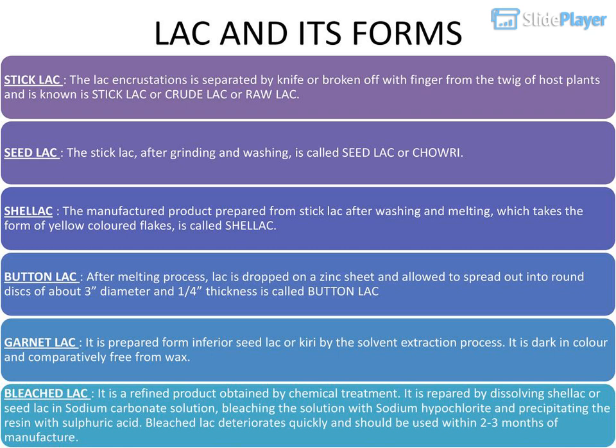Lac and its forms: Stick lac — the lac crust separated by knife or broken off from the twig of host plants — is known as stick lac, crude lac, or raw lac. Seed lac — the stick lac, after grinding and washing, is called seed lac or chowry. Shellac — the manufactured product prepared from stick lac after washing and melting, which takes the form of yellow-colored flakes, is called shellac.